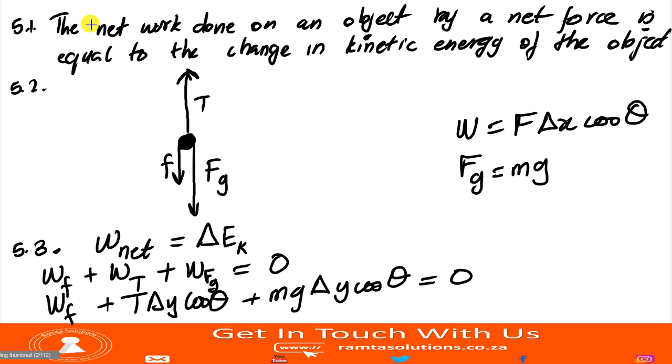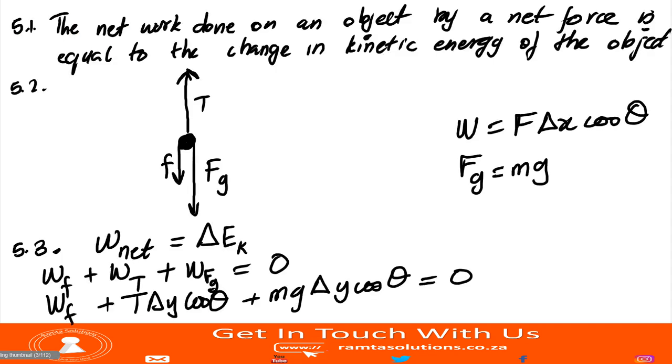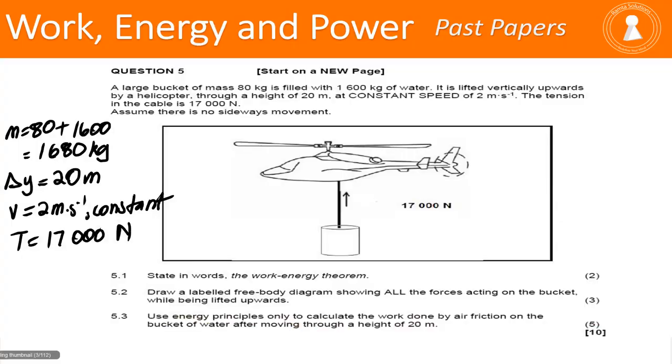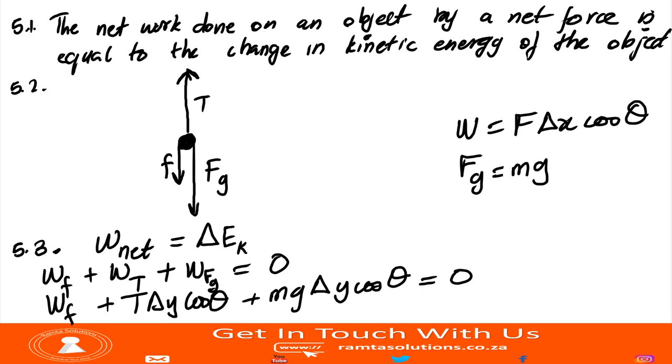Now let's substitute. The work done by friction is equal to, what is tension? Our tension was 17,000 newtons. And the distance was 20. So it's 17,000 newtons multiplied by 20. And remember, tension is in the same direction as the displacement. So it will be zero degrees. Plus, what is the mass? We found our mass to be 1,680. Times gravitational acceleration 9.8 times displacement 20. Weight is in the opposite direction. So it will be, because 180 degrees equals zero.